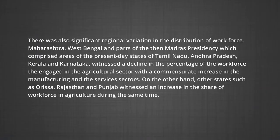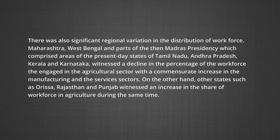So agriculture remained the major occupation in India. There were also significant regional variations in the distribution of workforce. Maharashtra, West Bengal and parts of the Madras Presidency — comprising present-day states of Tamil Nadu, Andhra Pradesh, Kerala and Karnataka — witnessed a decline in the percentage of the workforce engaged in the agricultural sector, with a commensurate increase in the manufacturing and service sectors. On the other hand, other states such as Odisha, Rajasthan and Punjab witnessed an increase in the share of workforce in agriculture during the same period.